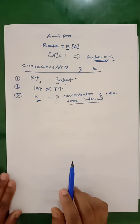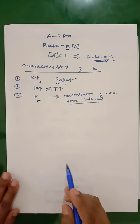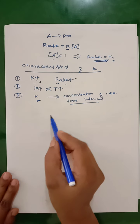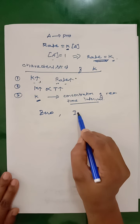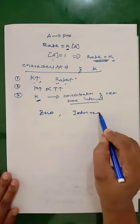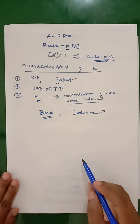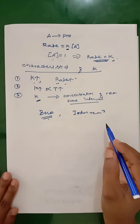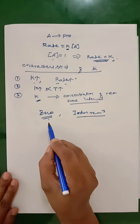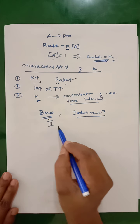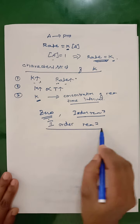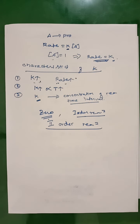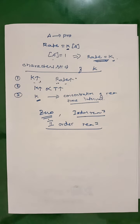In PUC we have studied the derivation of the rate constant — the integral form of rate expression — for a zero order reaction and also for a first order reaction. We don't need those two here. We will now go for the derivation of the rate constant for a second order reaction.